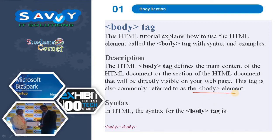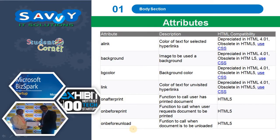The syntax has a starting and ending tag; in between we write the content. The attributes available in the body tag include: A link — color of the text for selected hyperlinks; background — image to be used; bgcolor — background color; and link — color of text for unvisited hyperlinks.